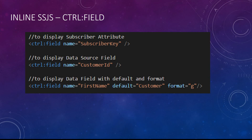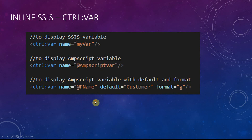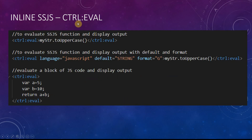For control:field, you can display a subscriber attribute like subscriber key, or a data extension field like customer ID or first name. If first name is null or empty, you can default to a string like 'customer' — so you can show 'Hello, [first name]' or 'Hello, customer'. Control:var is used to access variables declared in your code block — either an SSJS variable or an Ampscript variable; for Ampscript variables you must use the @ symbol to distinguish them. Default and format parameters are also available here. Control:eval is powerful because you can use it to evaluate a JavaScript function, expression, or even a block of code. For a single expression, you can omit the return keyword.